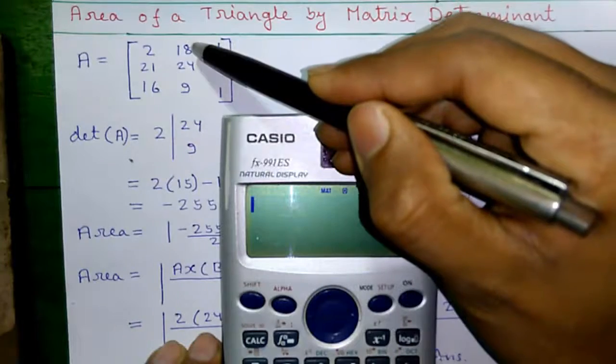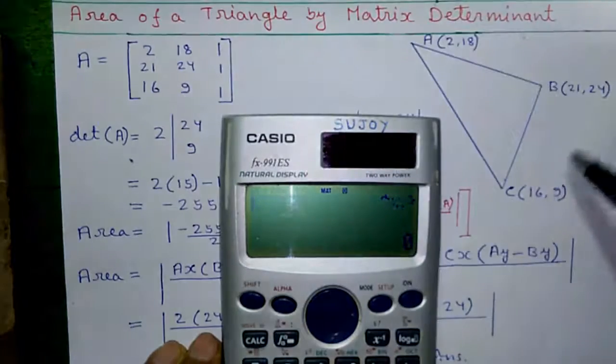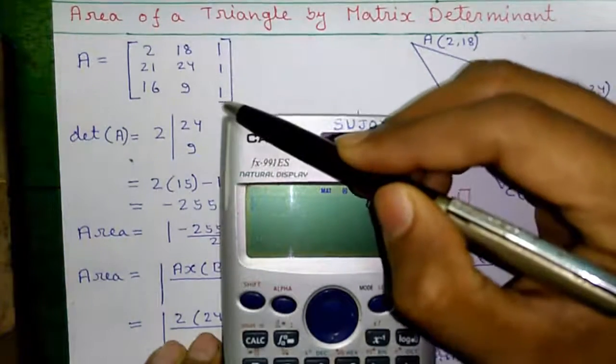Second column is obtained by writing all Y coordinate values: 18, 24, 9. And third column is all ones.